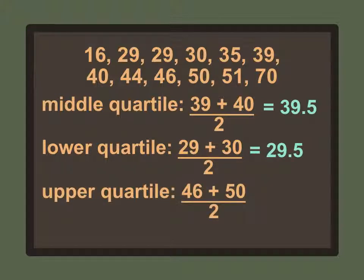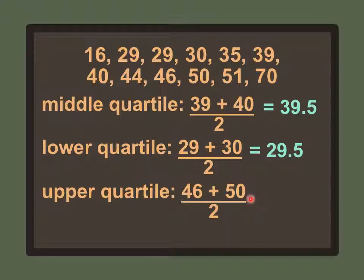To find the upper quartile, we find the median of the upper values — between 40 and 70. The two middle numbers are 46 and 50. We take the average: 46 plus 50 divided by 2, which gives us 48. So the middle quartile, lower quartile, and upper quartile will all show up on the box and whisker diagram.